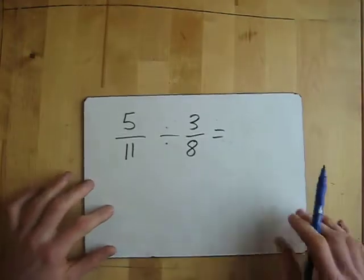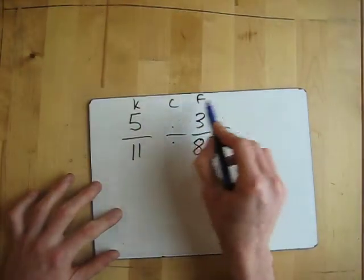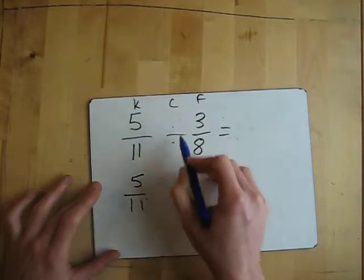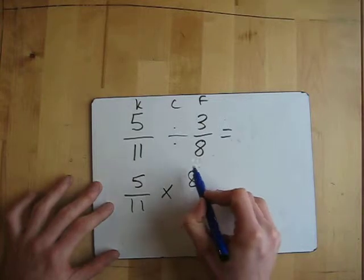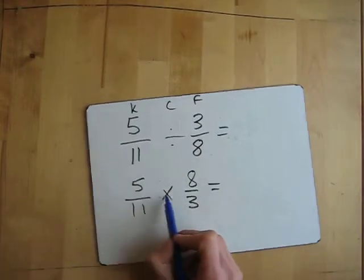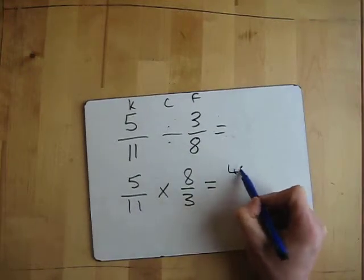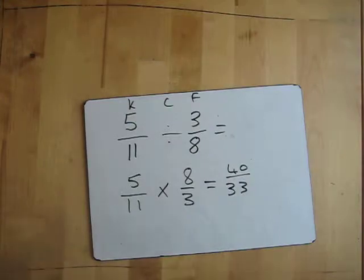Try another one. We've got 5/11 divided by 3/8. So KCF: keep, change, flip. Keep, change to multiply, and flip so 8 at the top and 3 at the bottom. Then work it out: 5 times 8 which is 40, then 11 times 3 which is 33. Done.